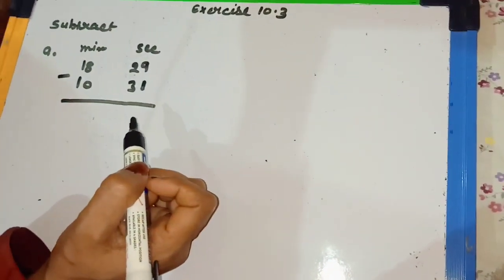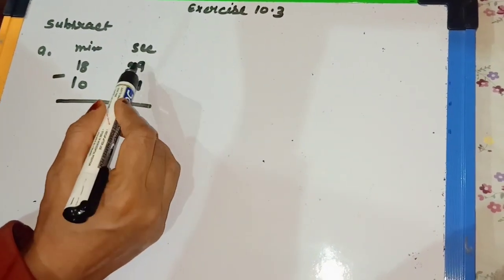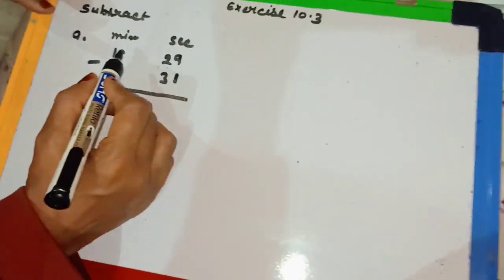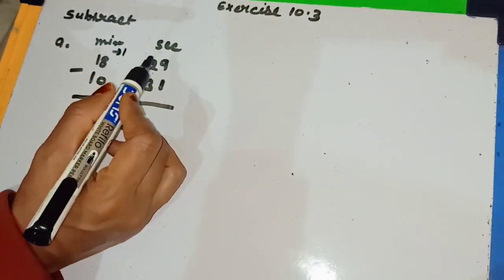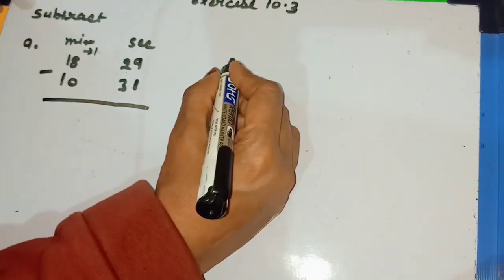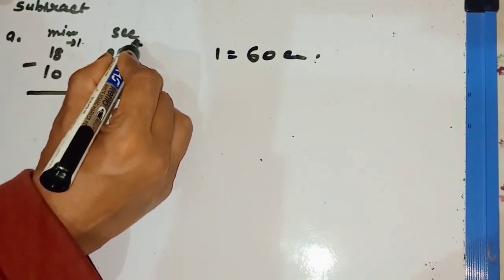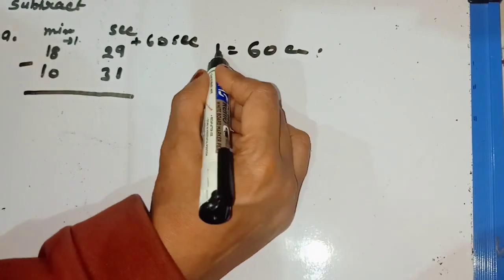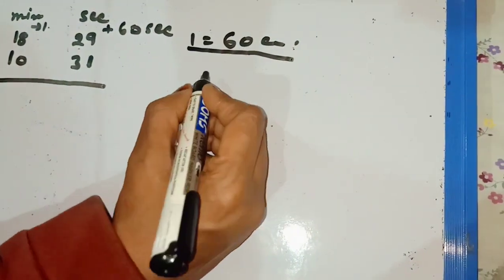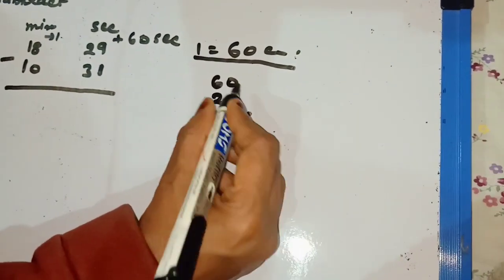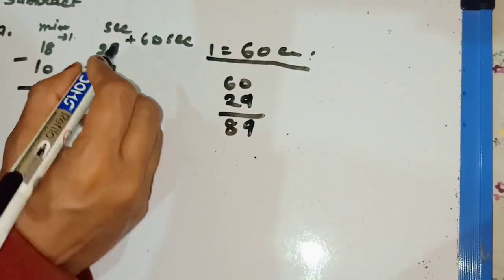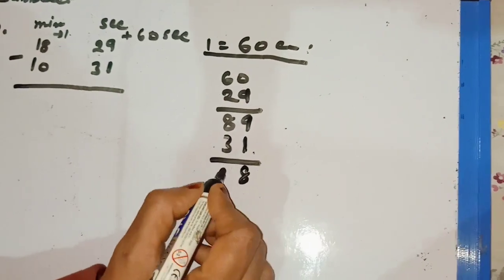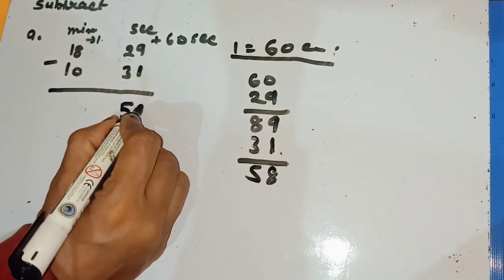Can we subtract 29 from 31? When we take the 2-digit number 29 from 31, it is not possible. So we take 1 carry from the minutes. When we take 1 carry, it converts: 1 minute equals 60 seconds. So we add 60 seconds here, making 60 and 29 equal to 89. When we subtract 31 from 89: 9 minus 1 is 8 and 8 minus 3 is 5, so it is 58 seconds.